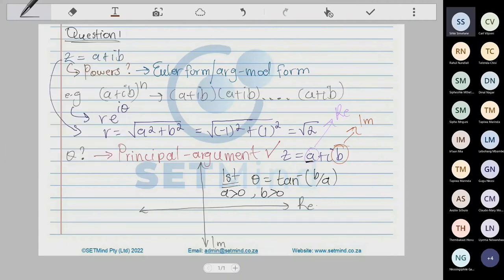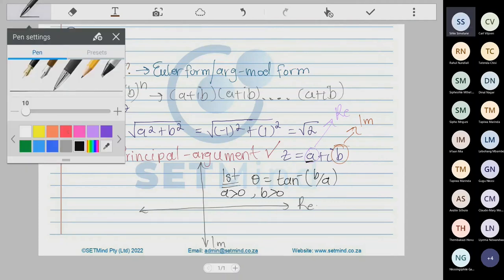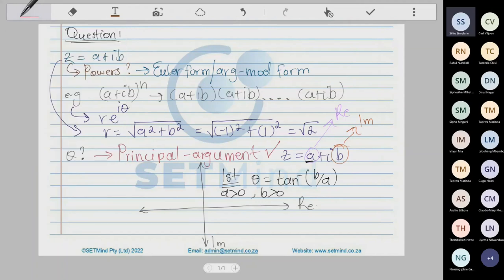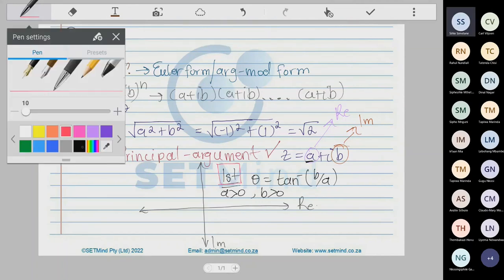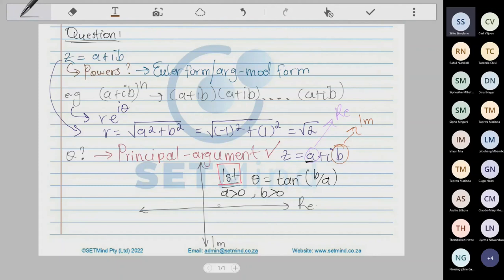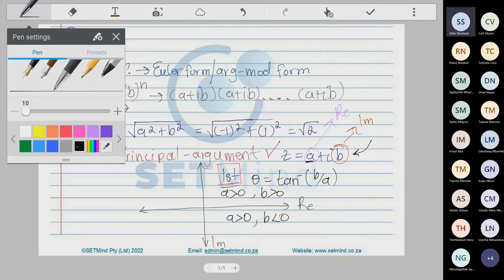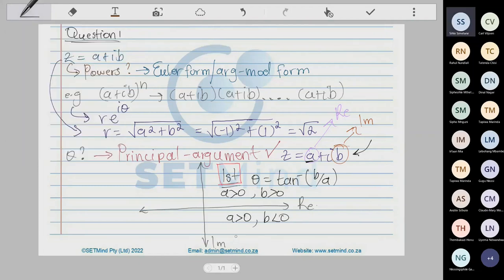So if you plot your complex number and you find out that it's in the fourth quadrant, in the fourth quadrant you will expect your a should be greater than zero, but your b should be less than zero. So if your a is greater than zero and b is less than zero, then clearly we're in the fourth quadrant and your theta which will give you the right answer is simply gonna be the arctan of b over a.